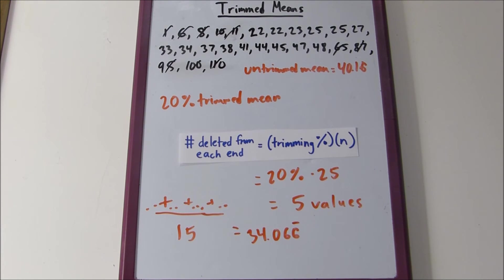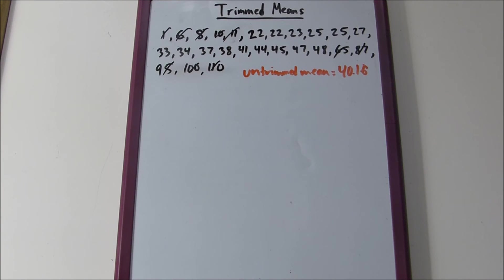Now, 20% is really big. You want to keep your trimming percentage between 5 and 25%. If you go any more, you're getting rid of not just outliers, but maybe important data in the set. Keep it between 5 and 25%.